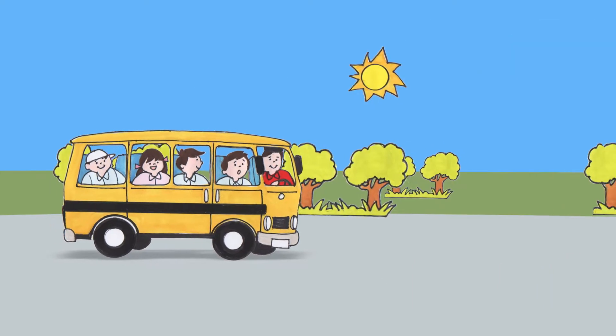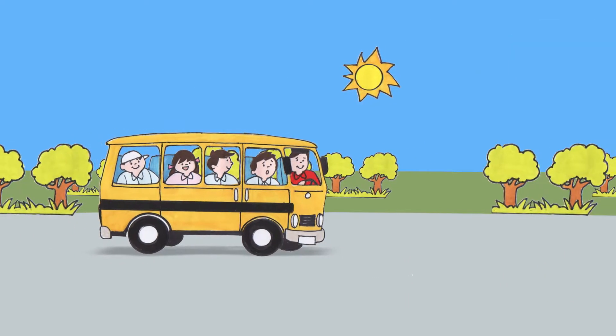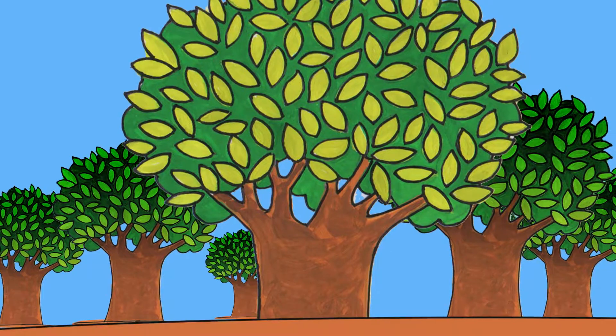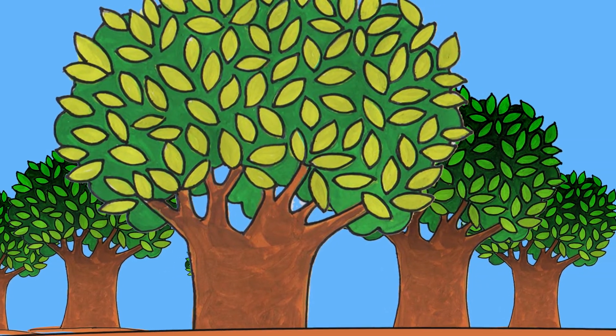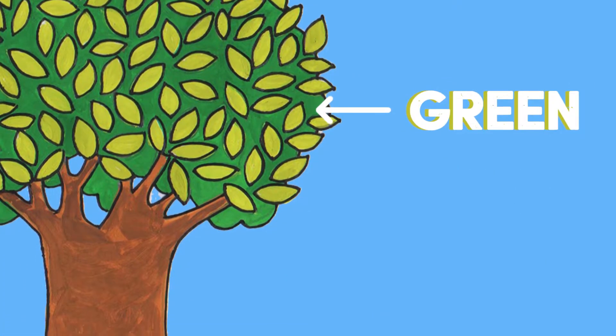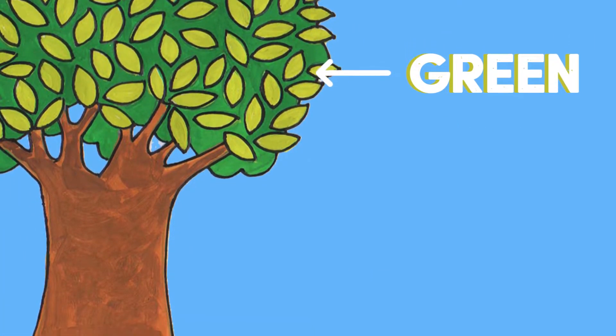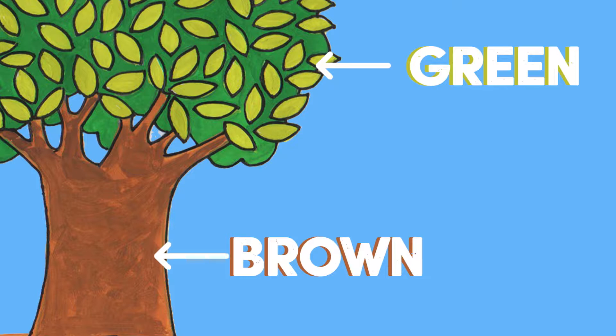Let's look outside again. There are trees. What color are the leaves? They're green. Their color is different from the trunk because the trunk is brown.